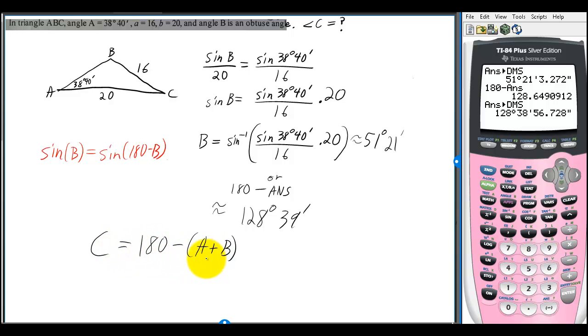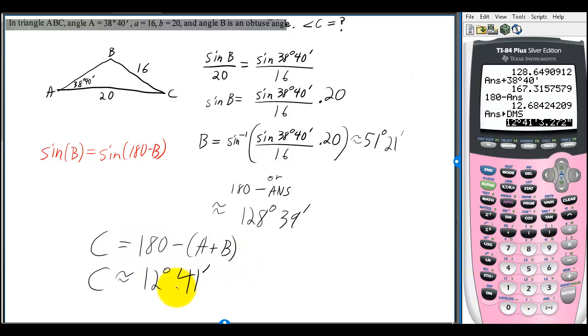So now to find C, we want to subtract the sum of A and B. And if you round to the nearest minute, you get C is about 12 degrees and 41 minutes.